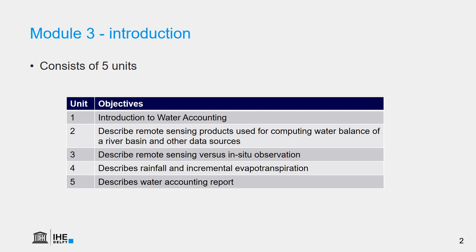The last unit, Unit 5, describes the water accounting report. It mainly discusses the resource-based sheet and accompanying tables and maps of the water accounting report. It also discusses key indicators of the state of water resources in the river basin.